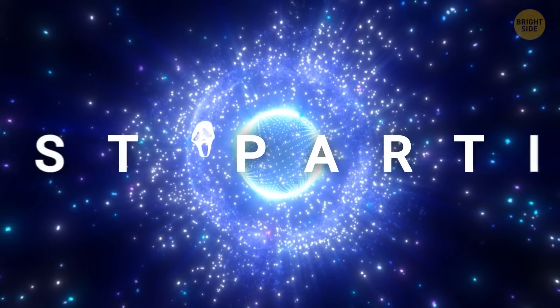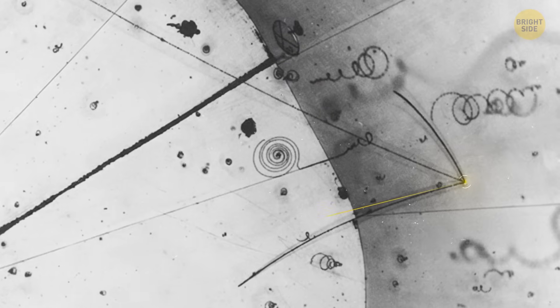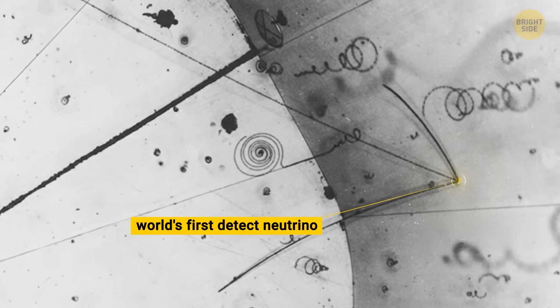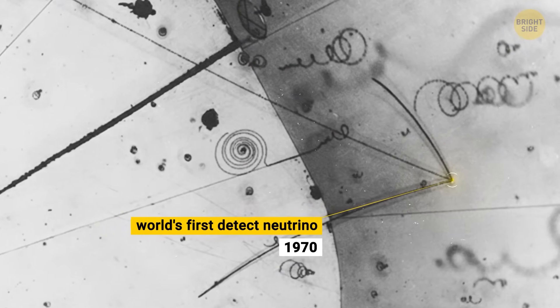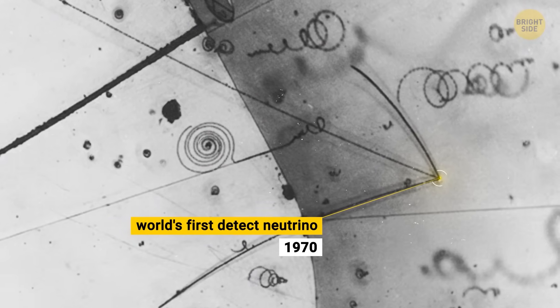Often nicknamed ghost particles, neutrinos are incredibly hard to detect, but may hold key clues about the universe's biggest puzzles, including how matter formed and whether our current understanding of physics needs an upgrade.